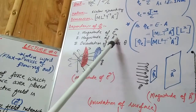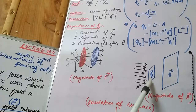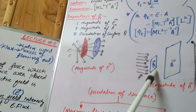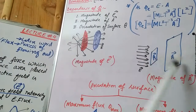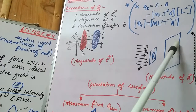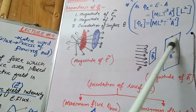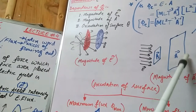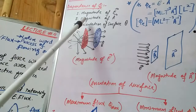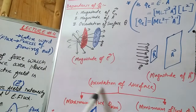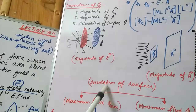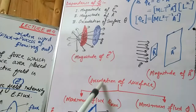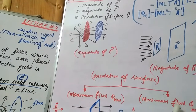The next factor is magnitude of area: when surface area is larger, electric flux is maximum, and when surface area is small, electric flux is minimum. In the case of a larger surface, more lines can cross it, so electric flux will be maximum. The third factor is orientation of the surface, meaning the position in which the surface is placed. Depending upon the orientation, we observe two types of flux: maximum flux and minimum flux.